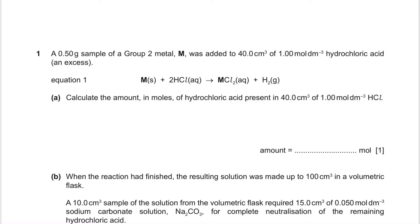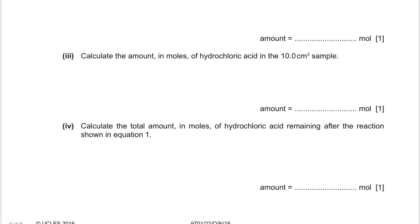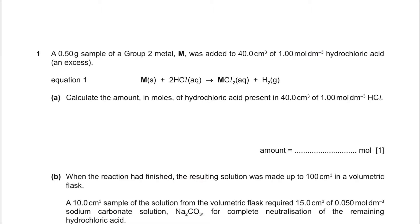The next question is from the October/November 2016 Paper 22. A 0.50 gram sample of a Group 2 metal was added to 40 cm³ of 1 mol/dm³ hydrochloric acid — this acid is in excess. It's very important in these questions to identify which substance is in excess, what amounts are given, and what substances are reacting with what.